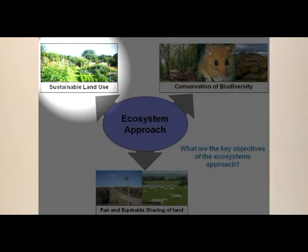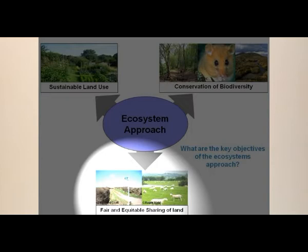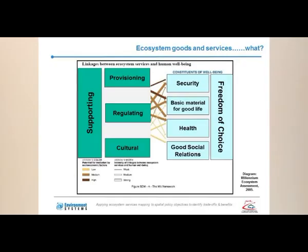The key objectives of the ecosystem approach are outlined in the Convention on Biological Diversity, which is an internationally legally binding treaty to sustain the rich diversity of life on earth. The United Nations has declared the period from 2011 to 2020 as the UN Decade on Biodiversity. There are three main objectives to the treaty: sustainable land use, meaning the economic value of the land; conservation of biodiversity, which we can think of in terms of environmental gain; and fair and equitable sharing of the land, meaning society's benefits from a block of land.